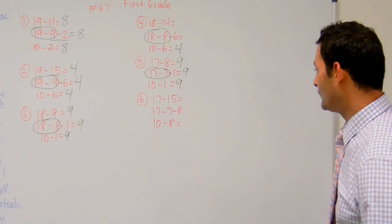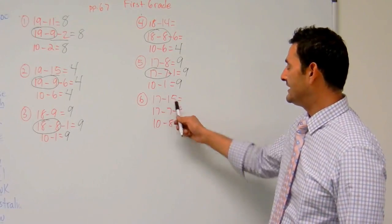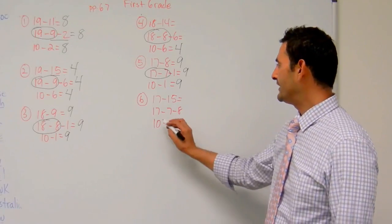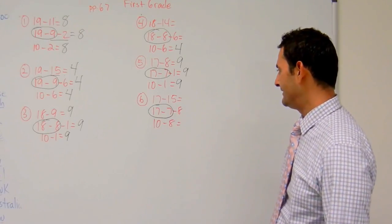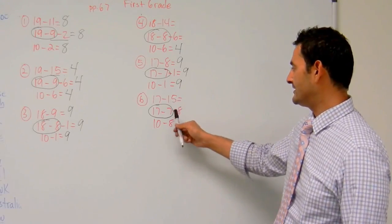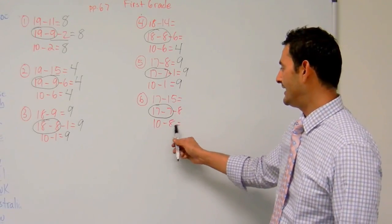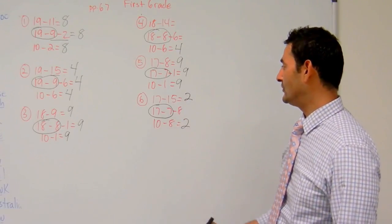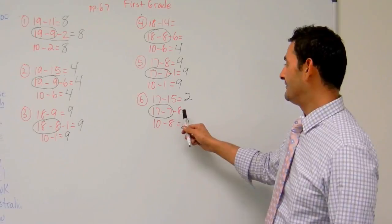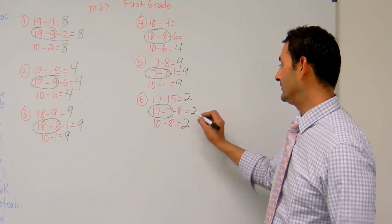And finally, let's do the last one, number 6. Here we have 17 minus 15. Well, in order to get a 10, I know that 17 minus 7 is 10. If I decompose this number, it's going to be a 7 and an 8. So now I have 10 minus 8 equals 2. 17 minus 15 equals 2. 17 minus 7 minus 8 more is going to be equal to 2 as well.